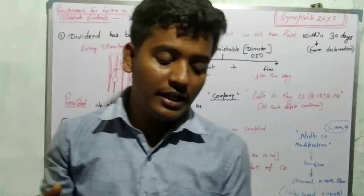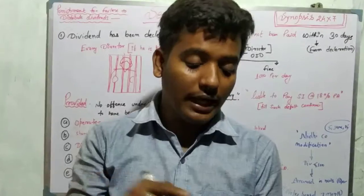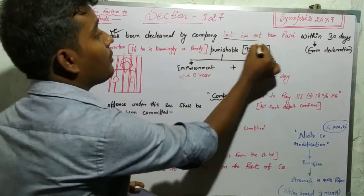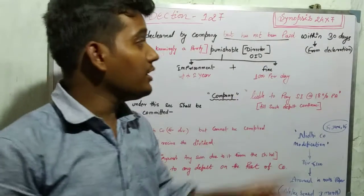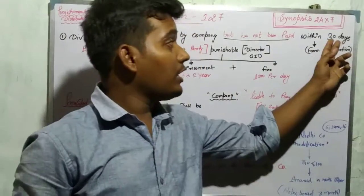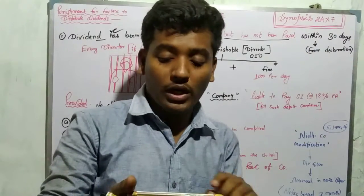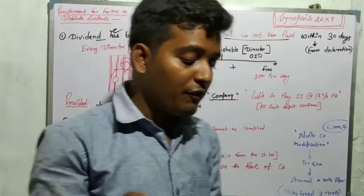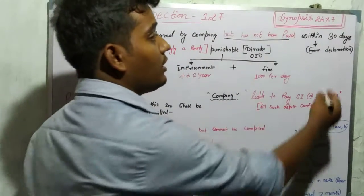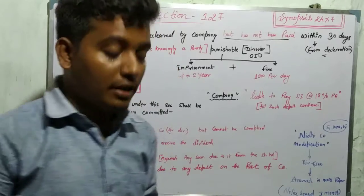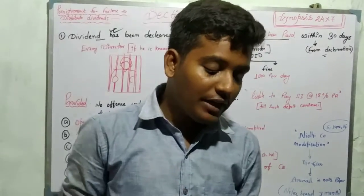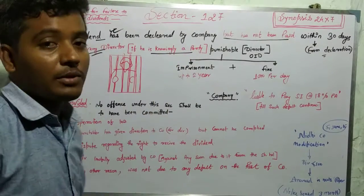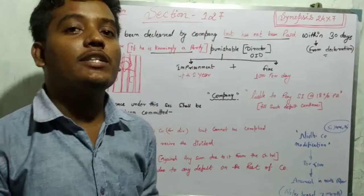Where a dividend has been declared by the company but has not been paid, within a period of 30 days from the date of declaration of dividend, in that case, every director of the company who is party to the default, who has known that we have not done this but has allowed it.